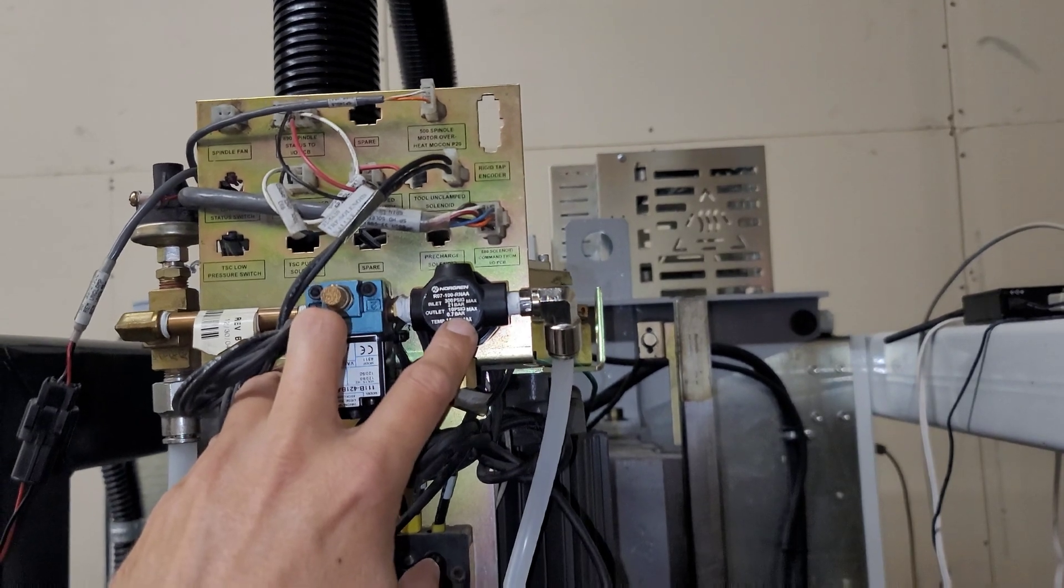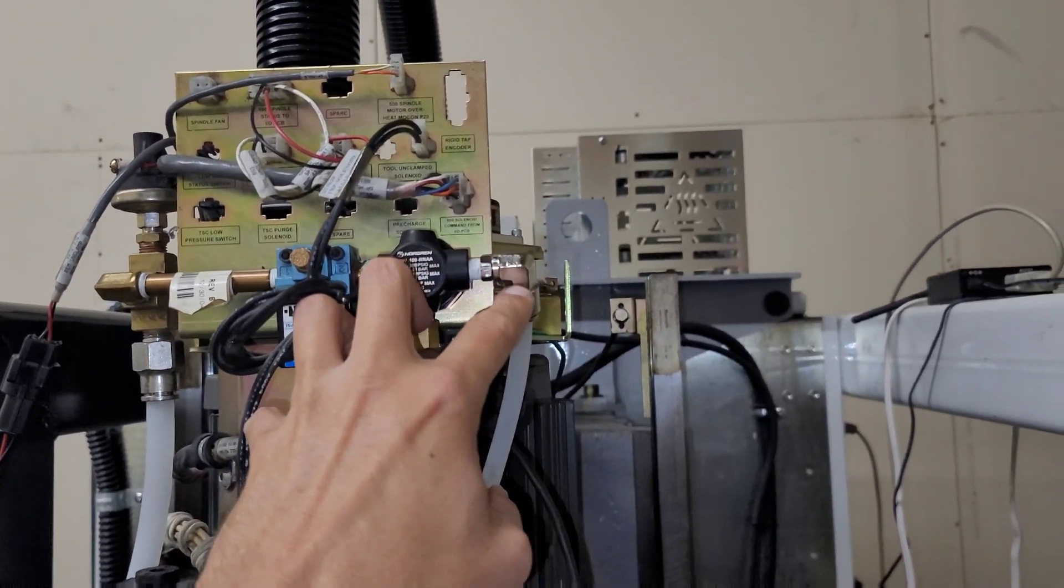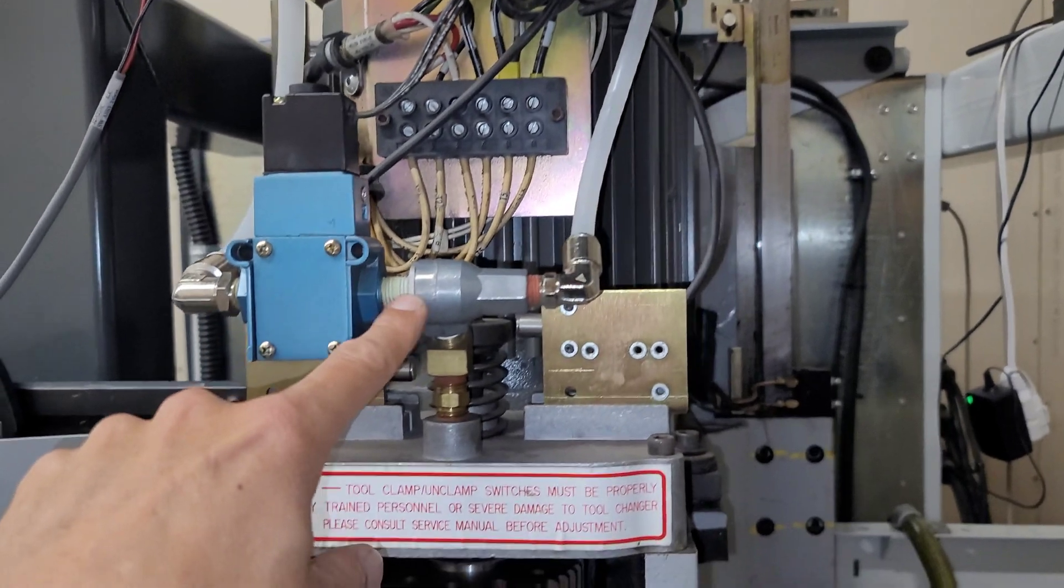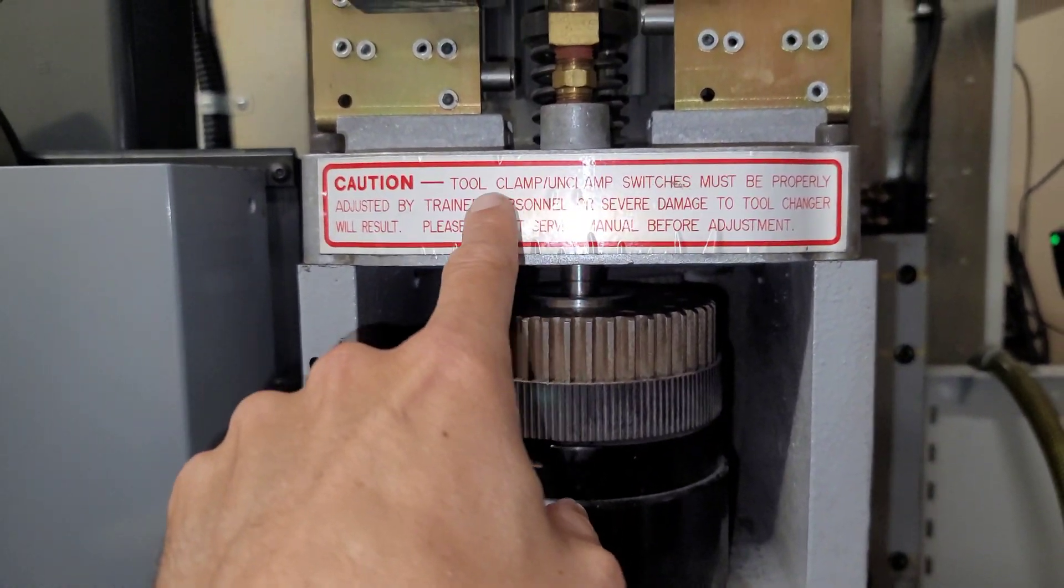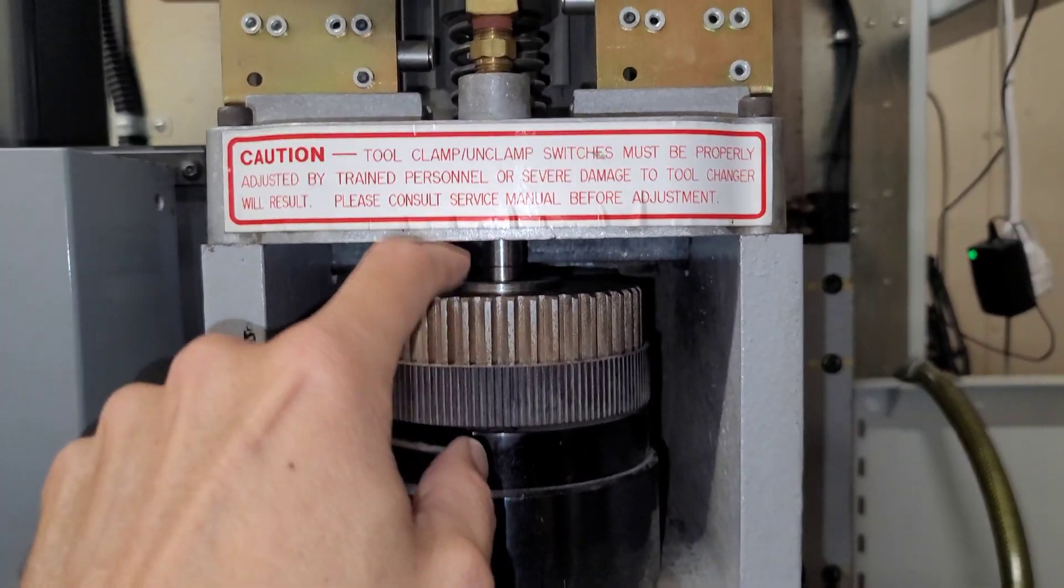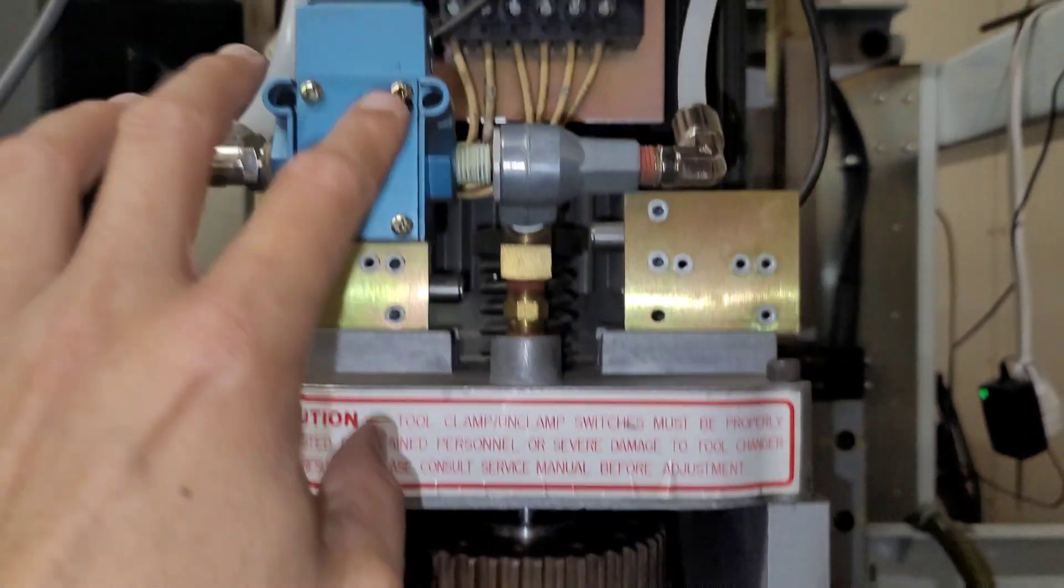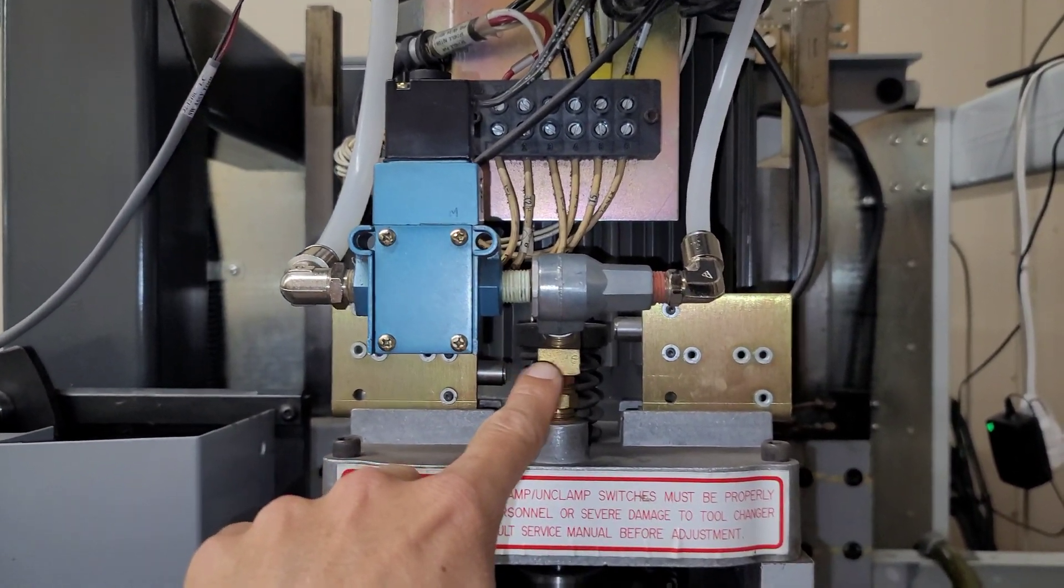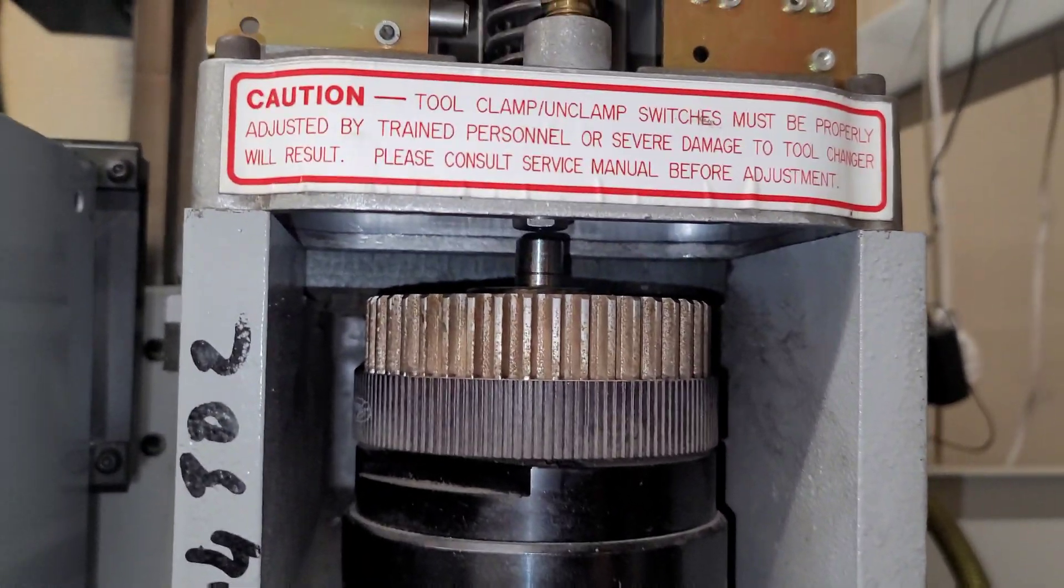This is the pre-charge solenoid and so it was clogged up in here and air was not passing through to pre-charge the tool release piston. So it was slamming hard against the draw bar because the only pressure that was coming through is the high pressure from here. But now it's fixed and works well.